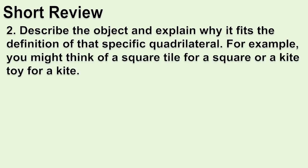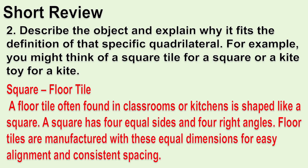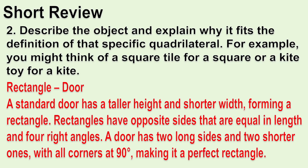Describe the object and explain why it fits the definition of the specific quadrilateral. Square — Floor tile: A floor tile often found in classrooms or kitchens is shaped like a square. A square has four equal sides and four right angles. Floor tiles are manufactured with these equal dimensions for easy alignment and consistent spacing. Rectangle — Door: A standard door has a taller height and shorter width, forming a rectangle. Rectangles have opposite sides that are equal in length and four right angles.